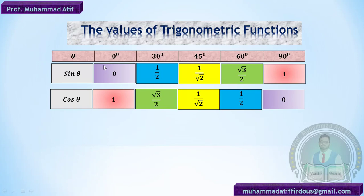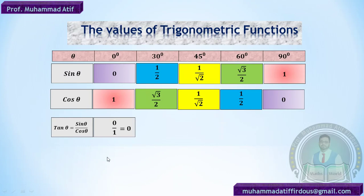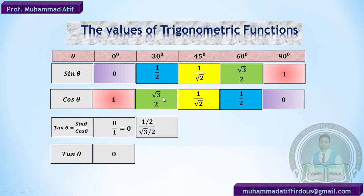Lastly, we find tangent theta. We know that tan θ = sin θ / cos θ. So tan 0° = 0/1 = 0. For tan 30°, divide sin 30° by cos 30°: (1/2) ÷ (√3/2) = 1/√3.